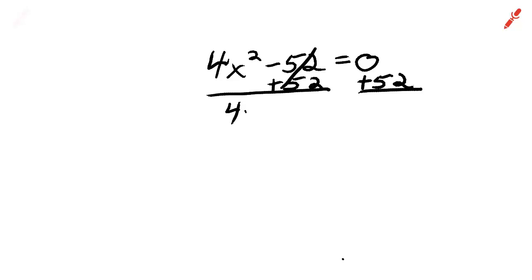The 52 is zero out on the left. We're left with 4x squared equals 52. Divide both sides by 4.